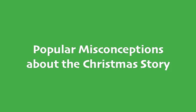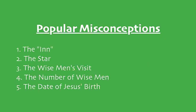We've got five little misconceptions that we'll take a look at this morning. The first one — let's take a look at Luke chapter 2. The first misconception is this: when they arrived in Bethlehem, there was no room for Joseph and Mary in the... what? That's the popular misconception number one — that there was no room for them in the inn.